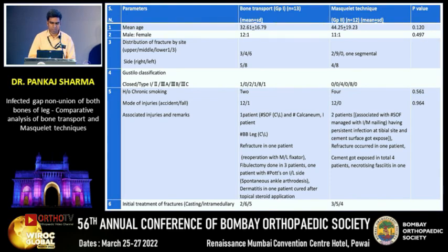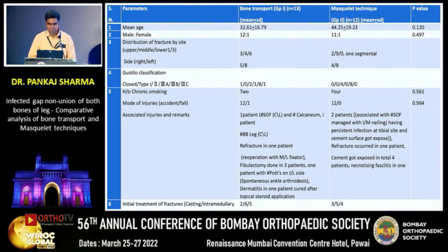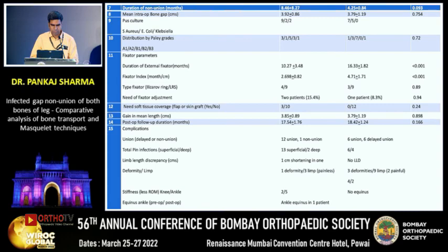The demographic profiles of both groups were similar with no statistically significant difference — the p-value was not significant. We had more male patients than female due to higher rates of polytrauma in males in that area. The Gustilo classification showed most patients in Type IIIA and IIIB groups. The mean intraoperative bone gap was almost equal: 3.92 cm and 3.7 cm in the two groups respectively.